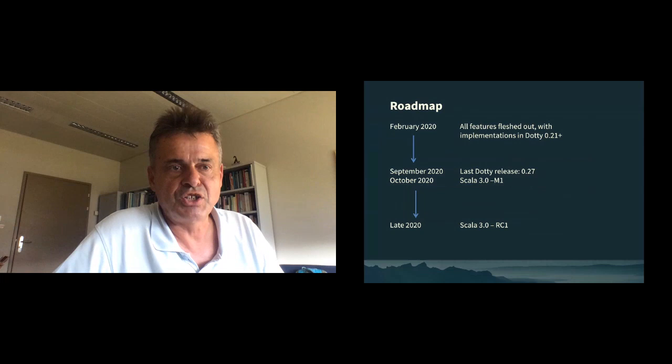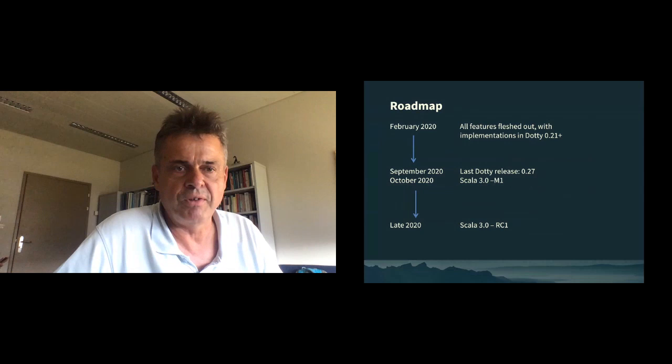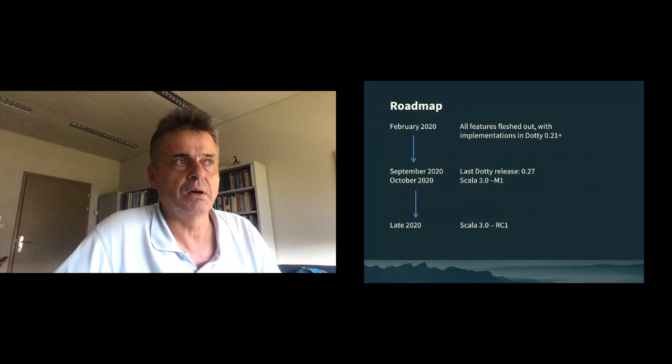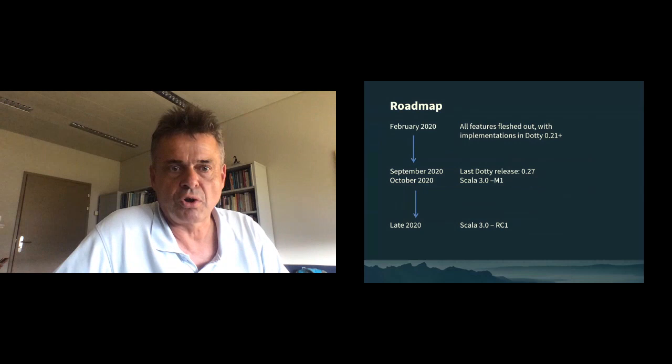This year we essentially said we would change the experimentation and really settle on a language. That happened in spring, where we had all features fleshed out. In May, we stopped any variation — so since then we're essentially in feature freeze. The feature set of Scala 3 is now frozen. We're working on documentation, tooling, specification, and tutorials.